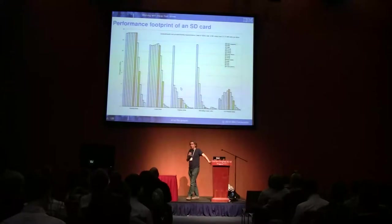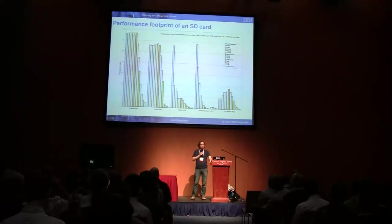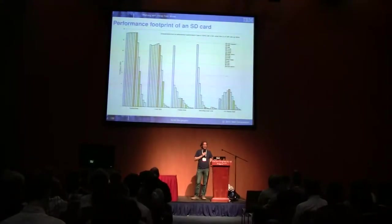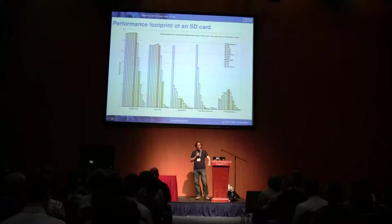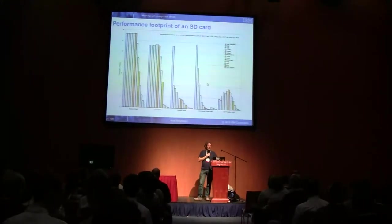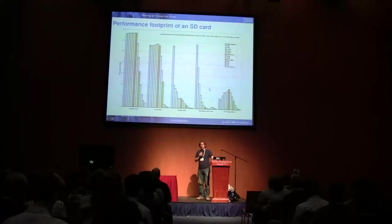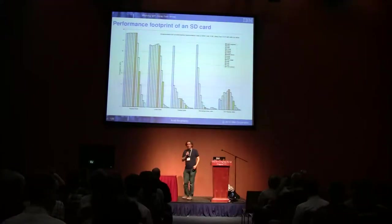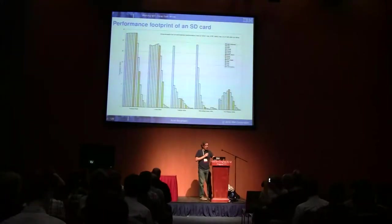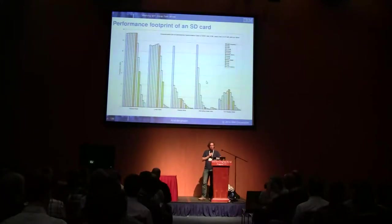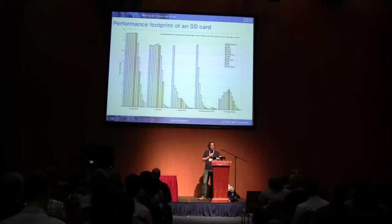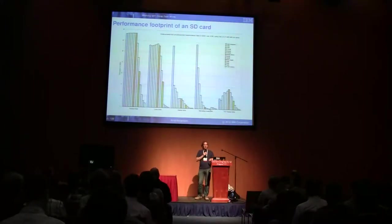That performance drop happens even within one 4-megabyte section. If you pick one 4-megabyte section and write it all at once, you're always fast. If you write the same data in random order, it's much slower. You get even slower when writing alternate blocks — picking two 4-megabyte blocks and alternating writes between them — down to a few kilobytes per second when doing 64-kilobyte blocks alternating linearly between the two.